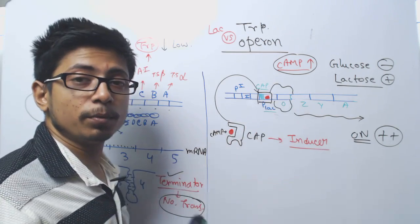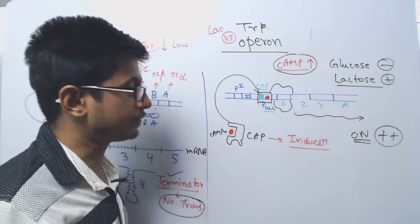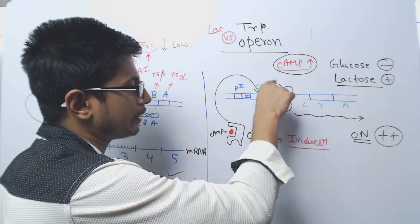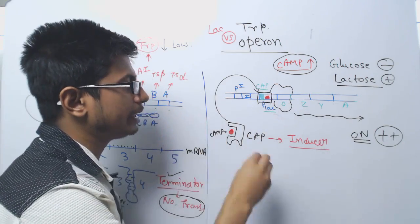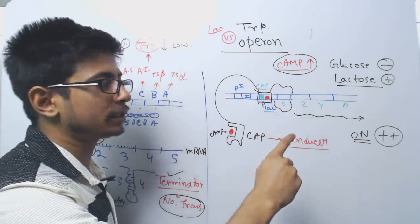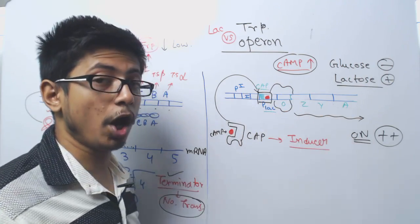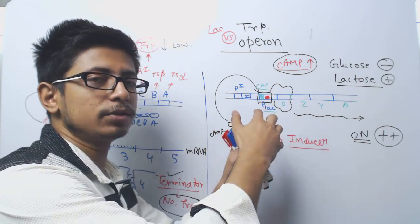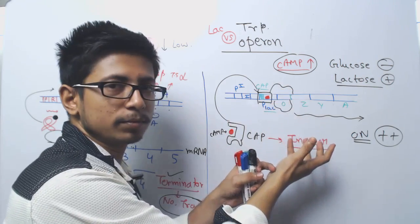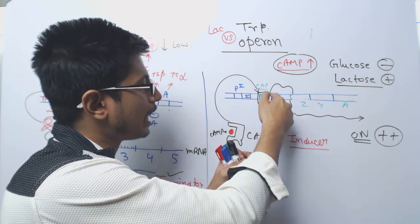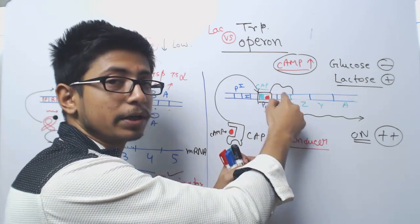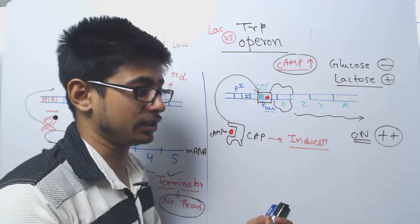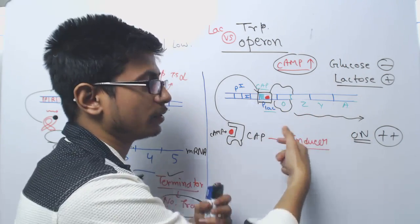If the inhibitor occupies the operator region, even though the promoter is free, the RNA polymerase cannot migrate past the operator because it is blocked by the inhibitor. So normally the operator is blocked and synthesis of lac operon genes is turned off. But if lactose is present, it binds with the inhibitor, causing structural changes so the inhibitor falls off the operator. The operator becomes free, RNA polymerase can bind to the promoter and transcribe the mRNA for structural genes ZYA, which are then translated into products that break down lactose.